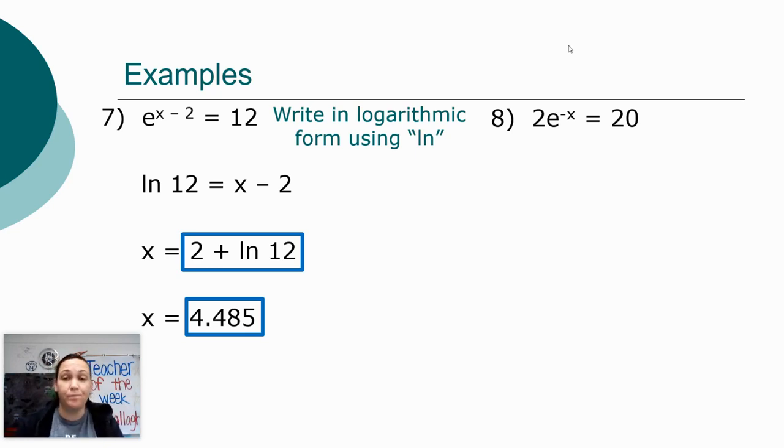But there's an extra number 2 in front of the e, and that extra number 2 is not part of the exponent. So the 2 needs to be moved to the other side.